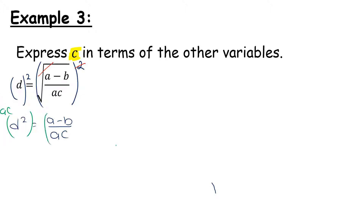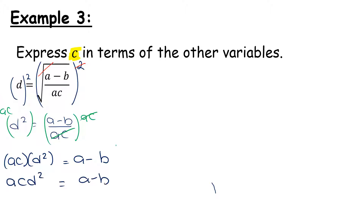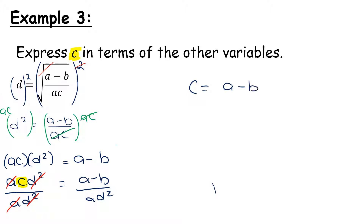Squaring gives us d squared equals (a minus b) over ac, because the square root and the square cancel each other. Now I have c underneath the line, so to get rid of the fraction I multiply both sides by ac. After cancellation I'm left with acd² = a − b. I divide both sides by ad², giving c equals (a − b) over ad². I've now expressed c in terms of my other variables.